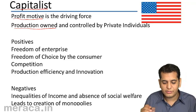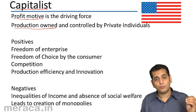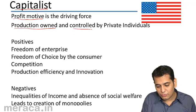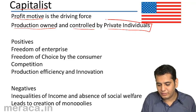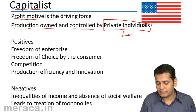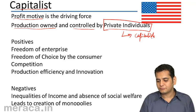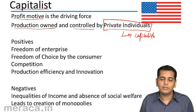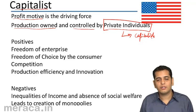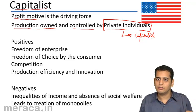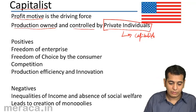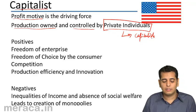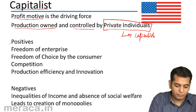The production facilities are owned and controlled by private individuals — that is the capitalist. The private individuals own and control the factors of production; production is owned and controlled by them. Now let's see what are the positives of a capitalist economy.